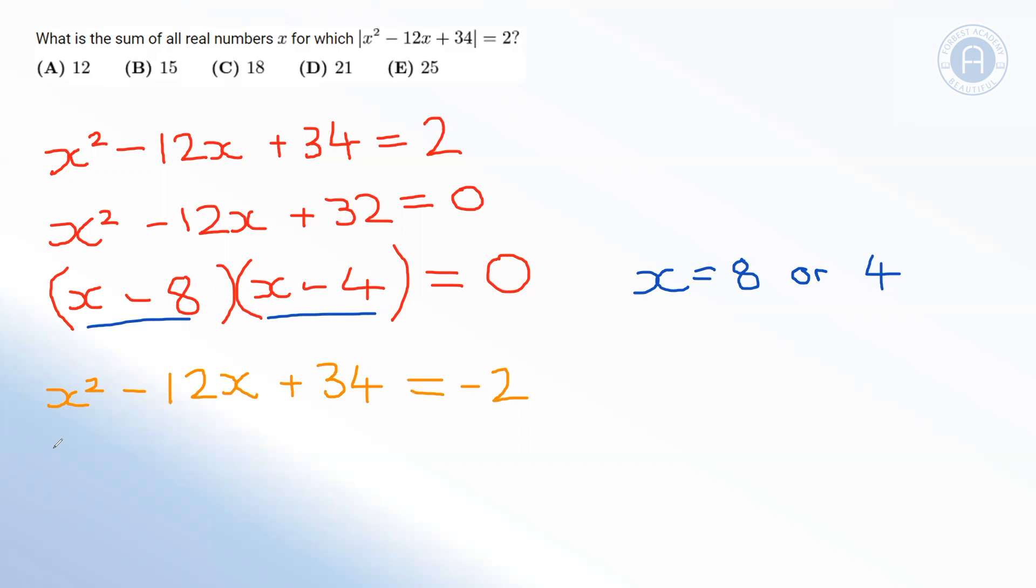So this is our other possible equation from this function. Again, we're going to set this equal to 0 so we can factorize it and solve. x squared minus 12x, we're going to add 2 to both sides this time, plus 36 is equal to 0. And we're going to factorize this, and it will become x minus 6 multiplied by x minus 6, or x minus 6 squared equals 0.